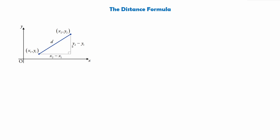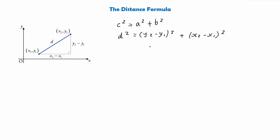For the vertical side of this right-angle triangle, the distance is y2 subtract y1. And for the horizontal side, the distance is x2 subtract x1 — that's where these values come from. So what is d? Well, from Pythagoras' theorem we know that c squared equals a squared plus b squared. So d squared equals y2 subtract y1, all squared, plus x2 subtract x1, all squared.